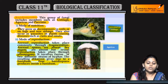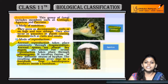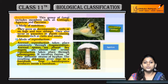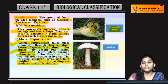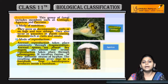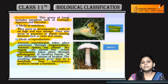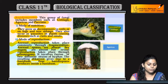Basidiomycetes mein dekha: woh decomposers aur parasites ki tarah act karte hain. Asexual spores absent hote hain to asexual reproduction hoti hai by fragmentation. Sex organs bhi absent hote hain but sexual reproduction hoti hai by plasmogamy jo dikaryon banata hai aur further basidium mein produce hota hai.